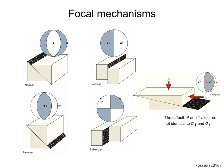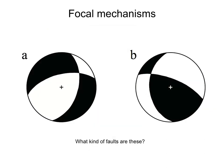Please study these diagrams carefully. These are beach ball diagrams for normal, vertical, reverse, and strike-slip faults. The rightmost figure shows that the P and T axes are not the same as the principal stresses sigma 1 and sigma 3. Figure A is a normal fault — the T-axis is sub-horizontal. Figure B is a thrust fault — the T-axis is sub-vertical. Both faults have a small component of strike-slip displacement.